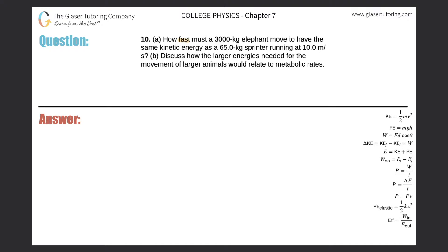Number 10: How fast must a 3,000 kilogram elephant move to have the same kinetic energy as a 65 kilogram sprinter running at 10 meters per second?